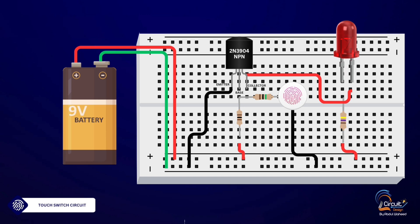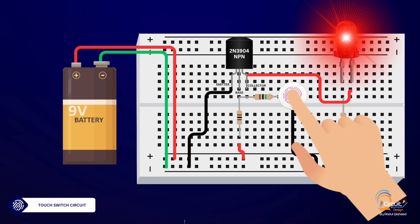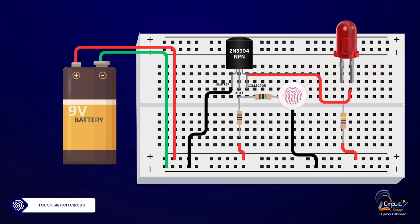And there you have it - a simple touch switch circuit using a 2N3904 transistor. This is a fantastic project to understand the basics of transistors and touch-sensitive circuits.